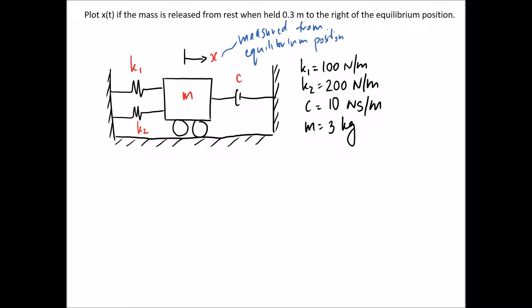So I asked to plot x as a function of time if the mass is released from rest when held at 0.3 meters to the right of the equilibrium position. So the only thing that I've changed from the previous example to this one is that our damper has a new value of 10 newton-seconds per meter compared to 60 in the last one.